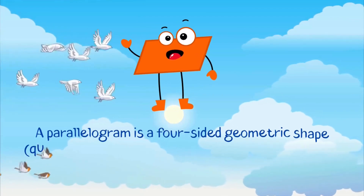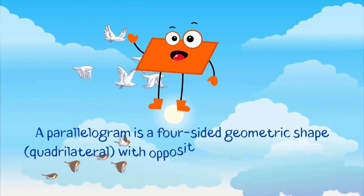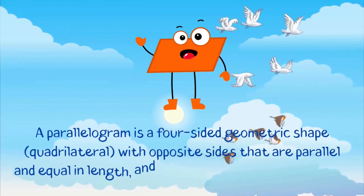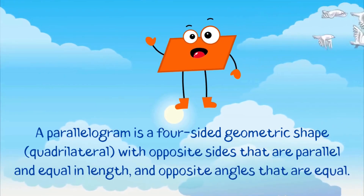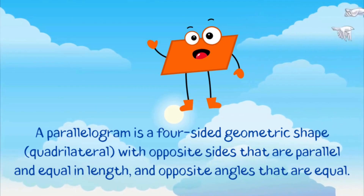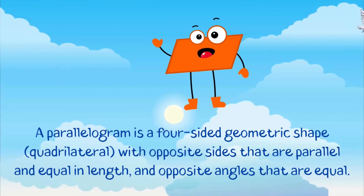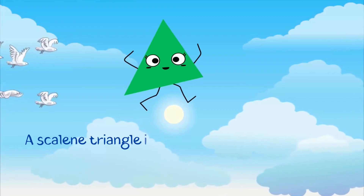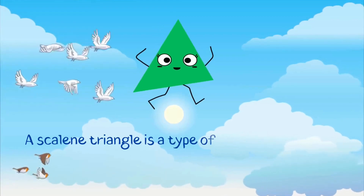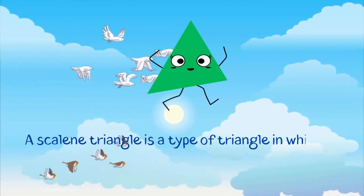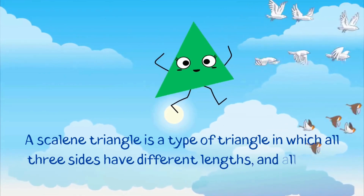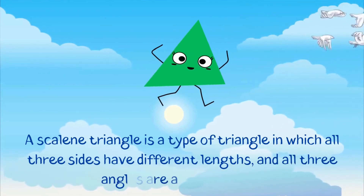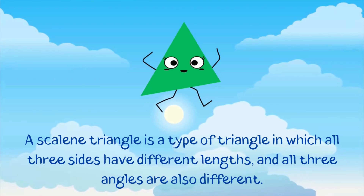A parallelogram is a four-sided geometric shape, or quadrilateral, with opposite sides that are parallel and equal in length, and opposite angles that are equal. A scalene triangle is a type of triangle in which all three sides have different lengths, and all three angles are also different.